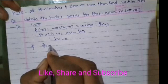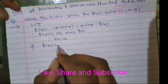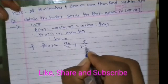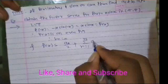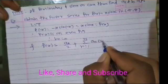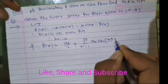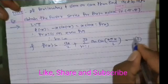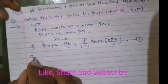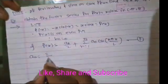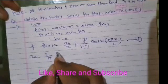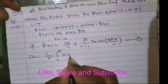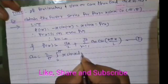The Fourier series expansion is f(x) = a0/2 + summation from n=1 to infinity of an·cos(nπx/l). We need to find only a0 and an. Where a0 = (2/l)·∫₀ˡ f(x)dx. Since l = pi, a0 = (2/π)·∫₀^π x·sin(x) dx.